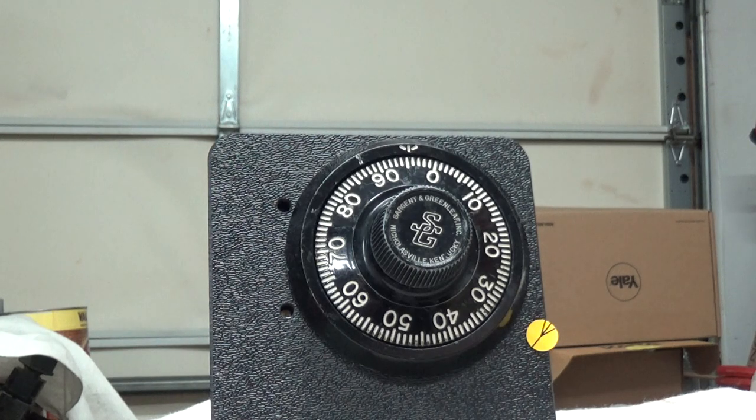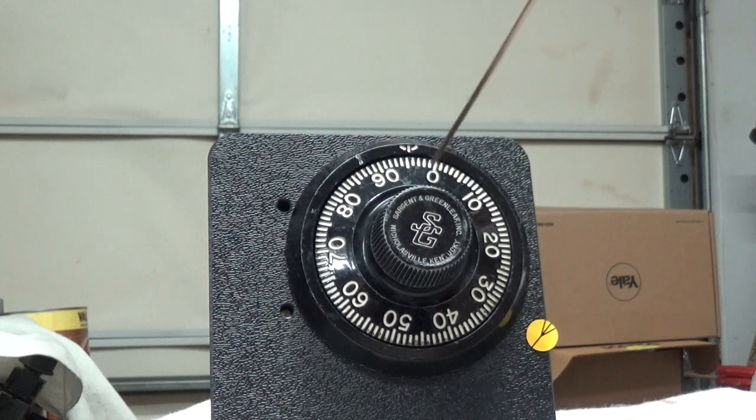Obviously we all know this is a dial. Typically on most Sargent and Greenleaf it's going to be 0 to 99. You're going to actually have two markings on there.